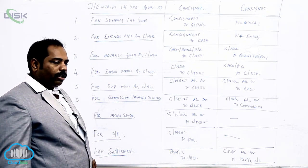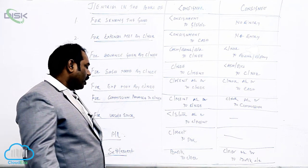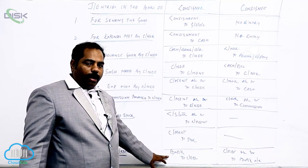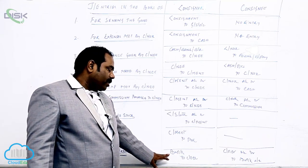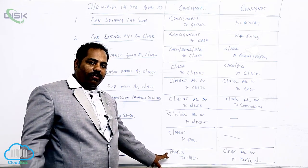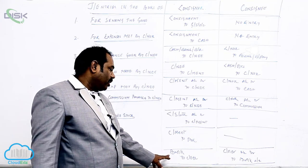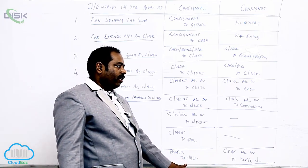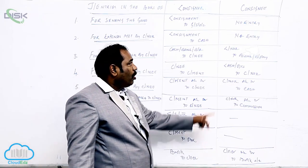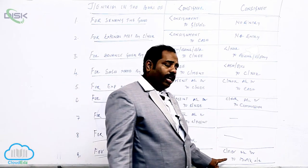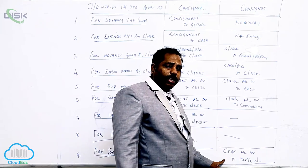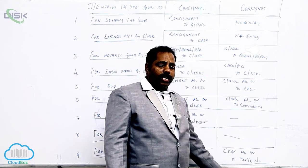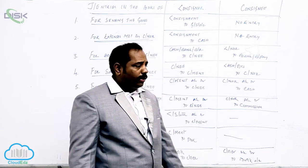Eighth: final settlement. At the end of the year, the consignee has to settle the account. When he pays the amount, the consigner is getting a check or bills receivable — credit the giver, consignee. What will the consignee write? Debit the receiver, consigner. He is paying through check, so the entry is: consigner account Dr. to bank.